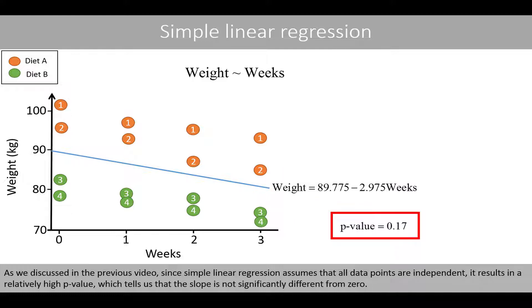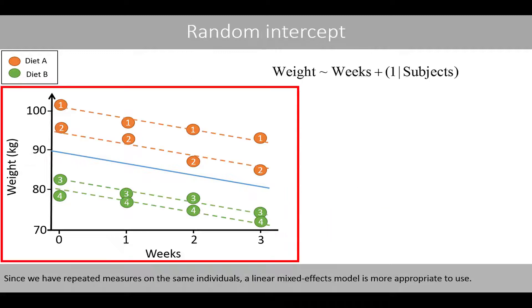As we discussed in the previous video, since simple linear regression assumes that all data points are independent, it results in a relatively high p-value which tells us that the slope is not significantly different from zero. Since we have repeated measures on the same individuals, a linear mixed effects model is more appropriate to use.